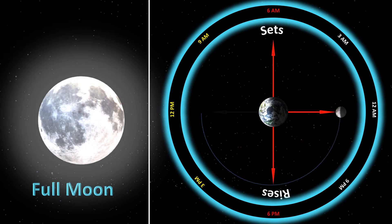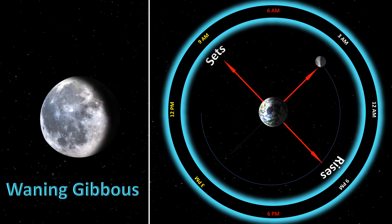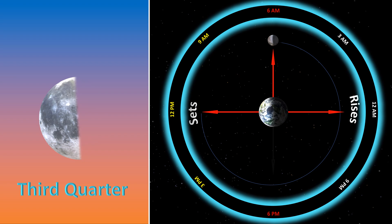The full moon occurs when the moon is on the opposite side of the earth from the sun and the near side is the illuminated side. On that day, the moon rises at sunset, transits the meridian at midnight, and sets at sunrise — it is visible all night long. The waning gibbous moon rises after sunset, transits the meridian after midnight, and sets after sunrise. The third, or last, quarter moon rises at midnight, transits the meridian at sunrise, and sets at noon.